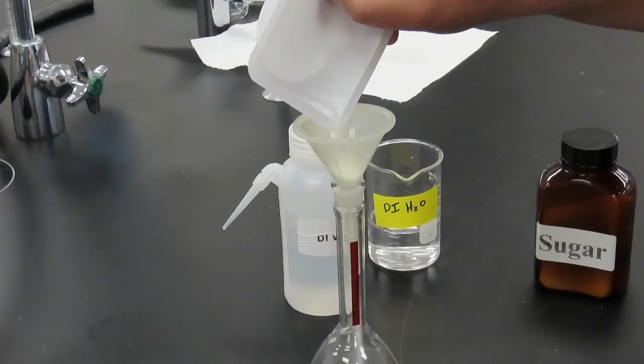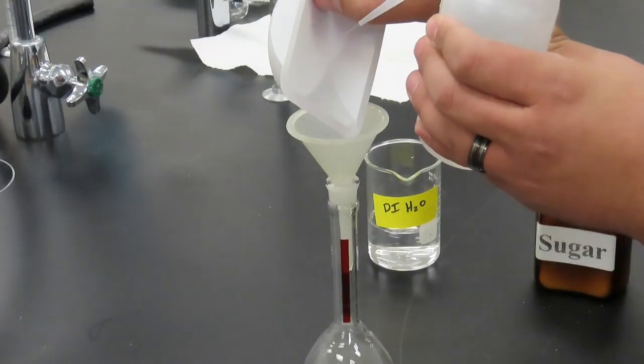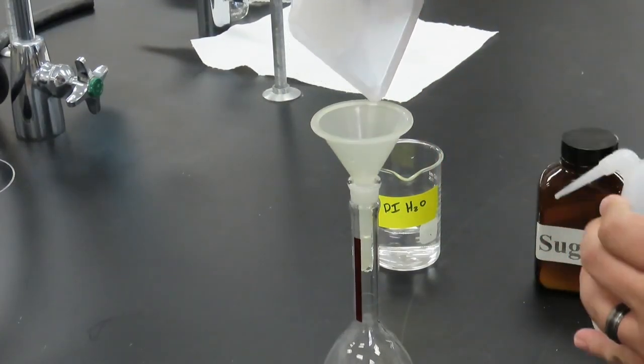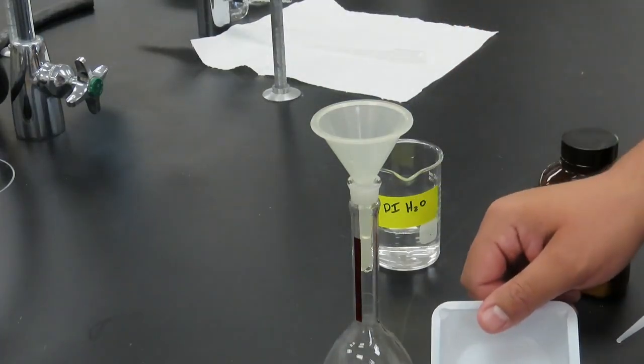Pour your solid solute into the funnel. Use DI water to rinse out the weigh boat to ensure you got all the possible solute, and then rinse out the funnel into the volumetric flask to ensure that everything is properly mixed in.